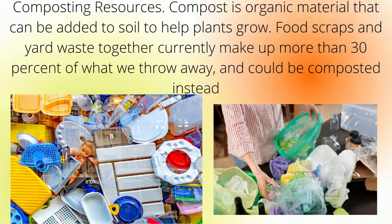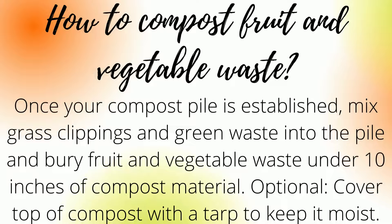Compost is organic material that can be added to soil to help plants grow. Food scraps and yard waste together make up more than 30% of waste flow and could be composted. Once your compost pile is established, mix grass clippings and green waste into the pile and bury fruit and vegetable waste under 10 inches of compost material.